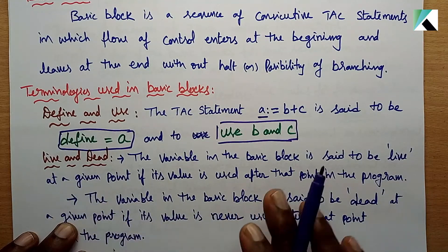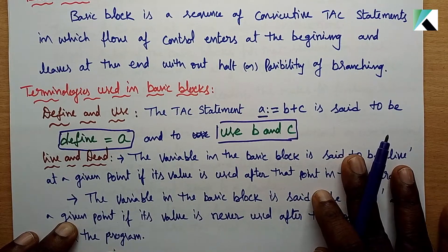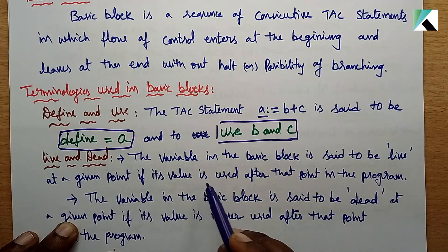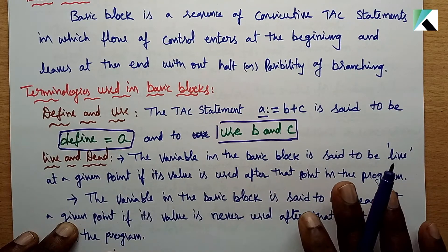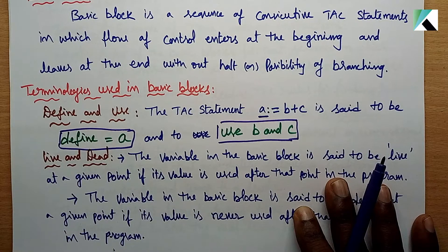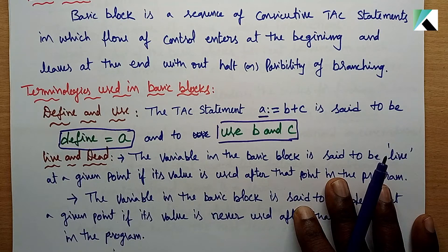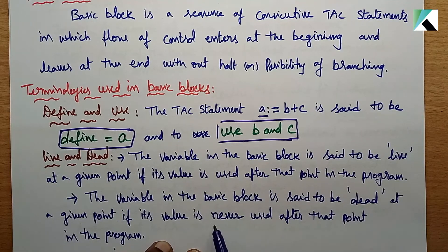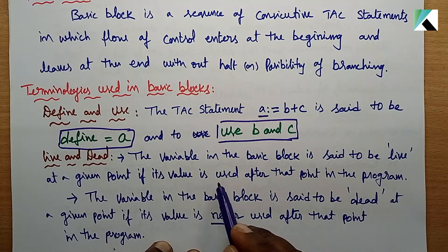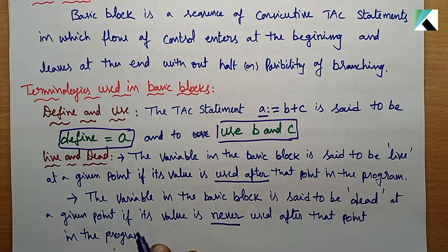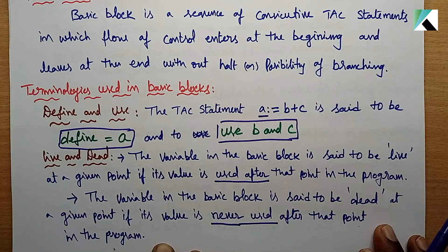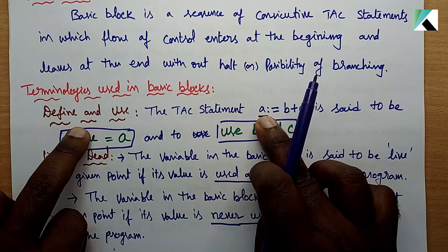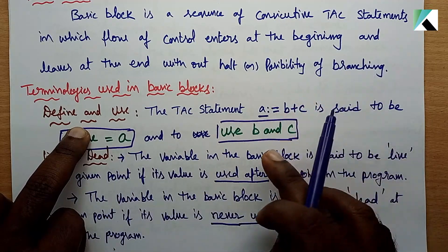We also have the concepts of live and dead variables. A variable in a Basic Block is said to be live if its value is used after that point in the program. A variable is said to be dead if its value is never used after that point. If we assign a new value to a variable through some computation, that is a define, and the old value is dead.